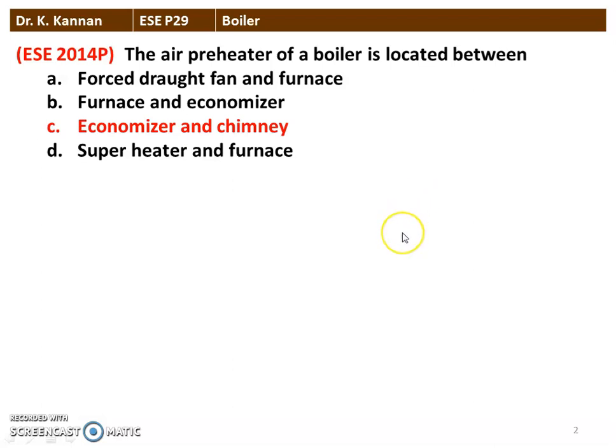The order of equipment in the boiler is: evaporator, superheater, economizer, air preheater, induced draught fan, and then chimney. So the air preheater is located between economizer and chimney.